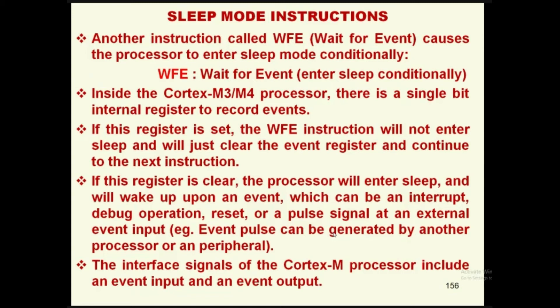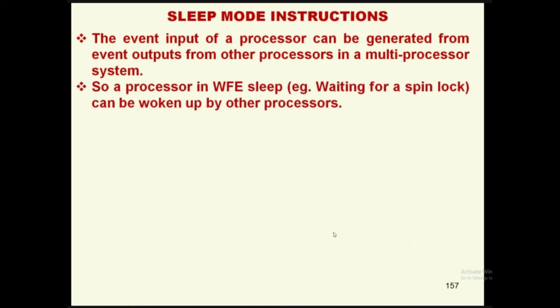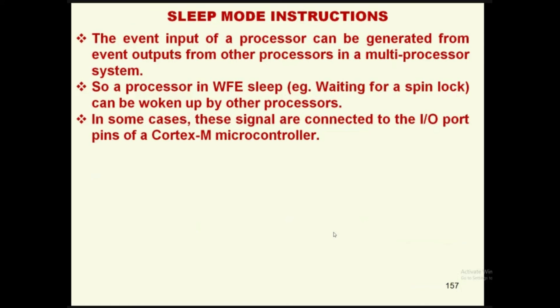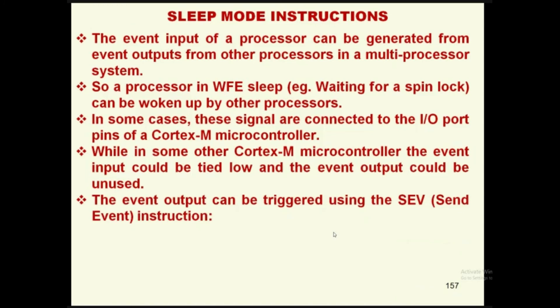The interface signals of the Cortex-M4 processor include an event input and an event output. An event input of the processor can be generated from the event outputs of another processor in a multi-processor system. A processor in Wait for Event sleep can be woken up by another processor. In some cases these signals are connected to the I/O port of the Cortex microcontroller, while in other Cortex microcontrollers the event input could be tied low and the event output could be unused.